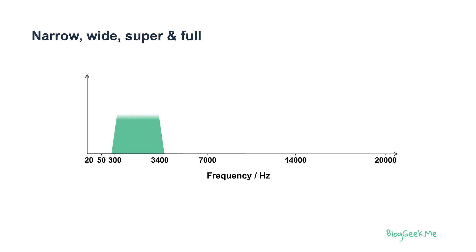If we look at 300 to 3,400 — usually called up to 4,000 Hertz — that would be narrow band. Narrow band is what you get on a PSTN phone call, on a voice call from an old phone.